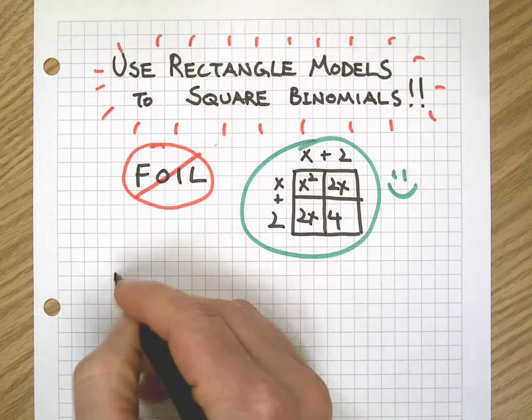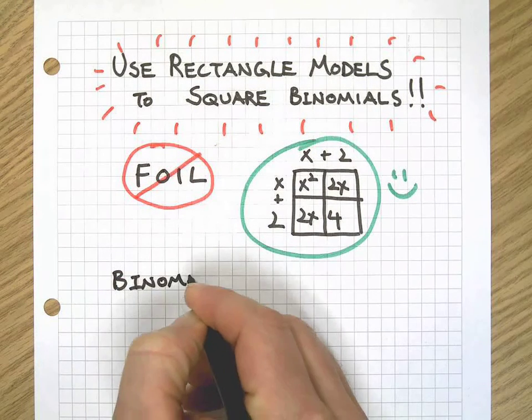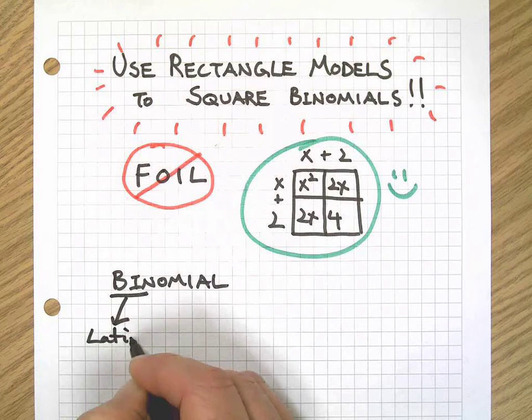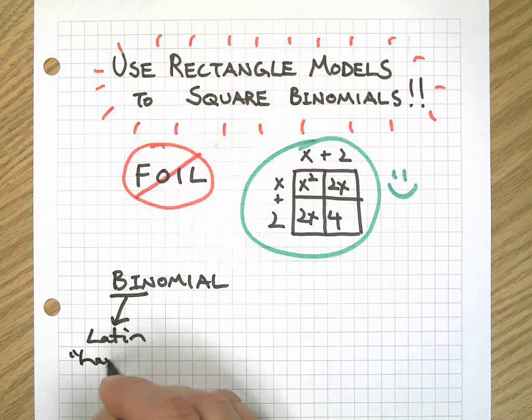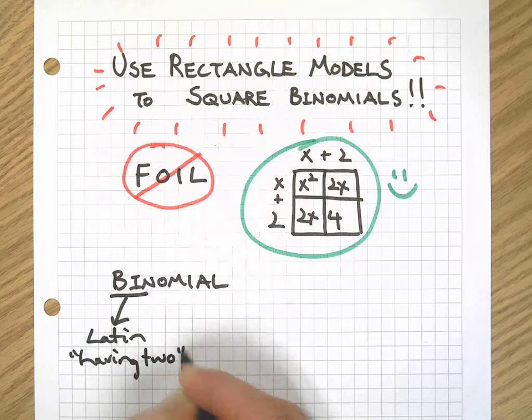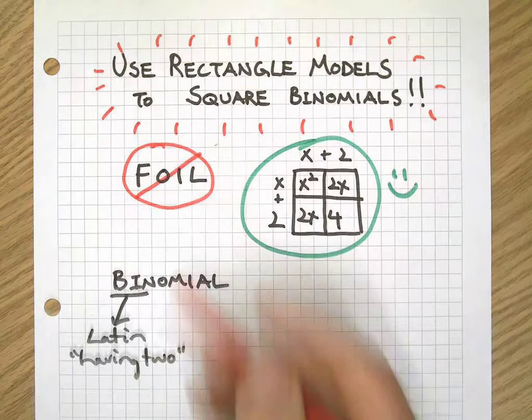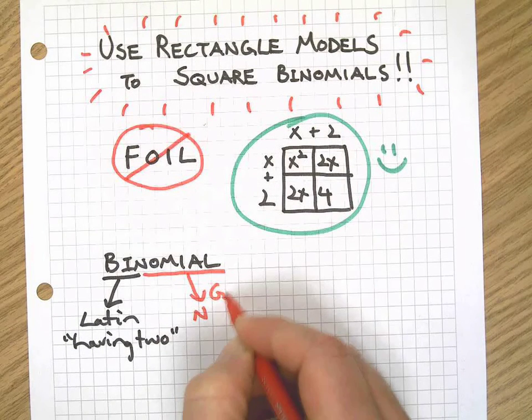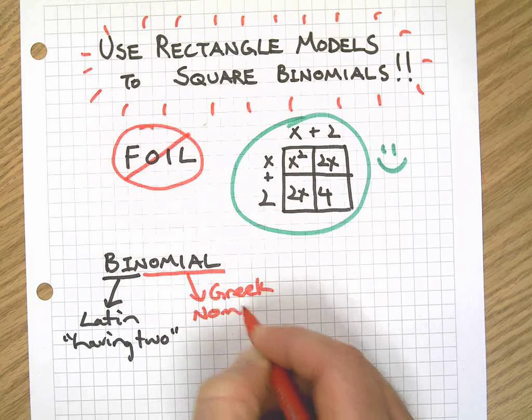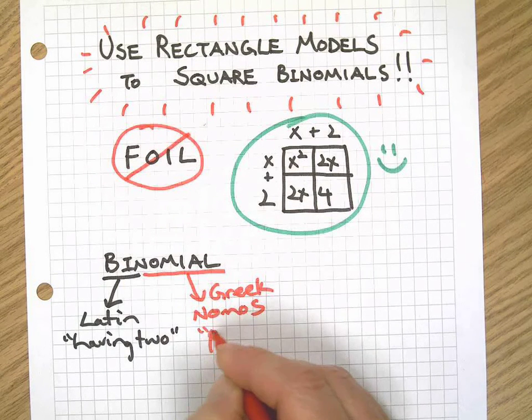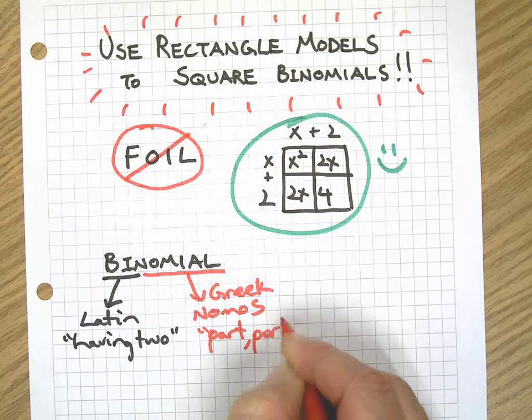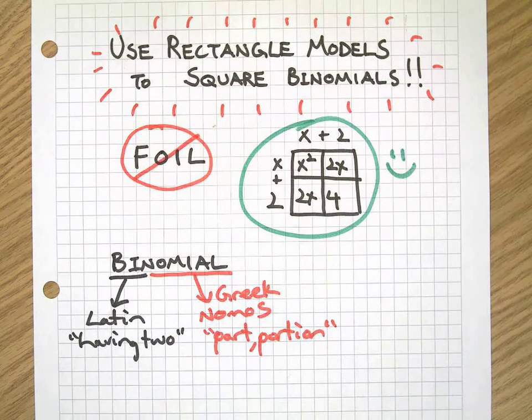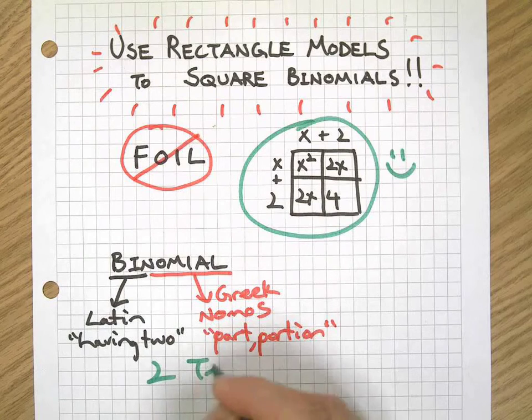What is a binomial? Well, binomial is 'bi,' which is a Latin prefix meaning 'having two,' you probably knew that already, right? And 'nomial' is from the Greek 'nomos,' which means part or portion. So a binomial has two parts. For us, that means it has two terms. All right, so we have a little language background there.